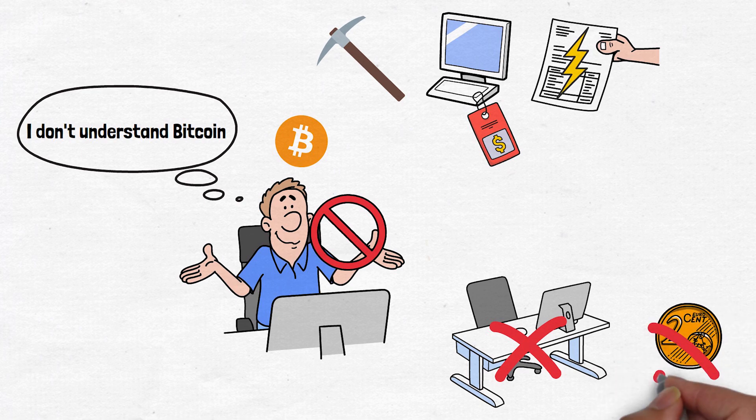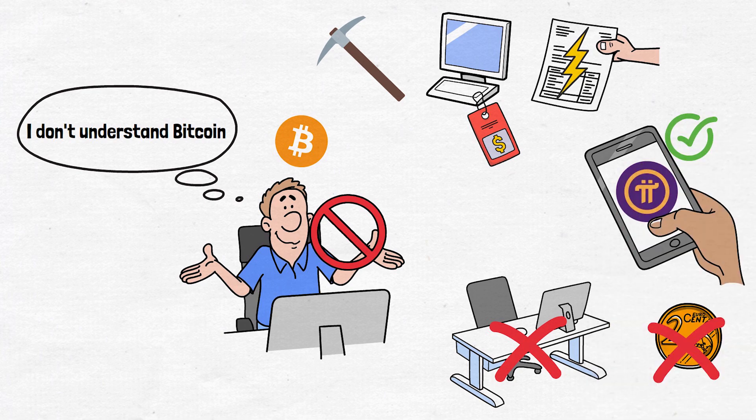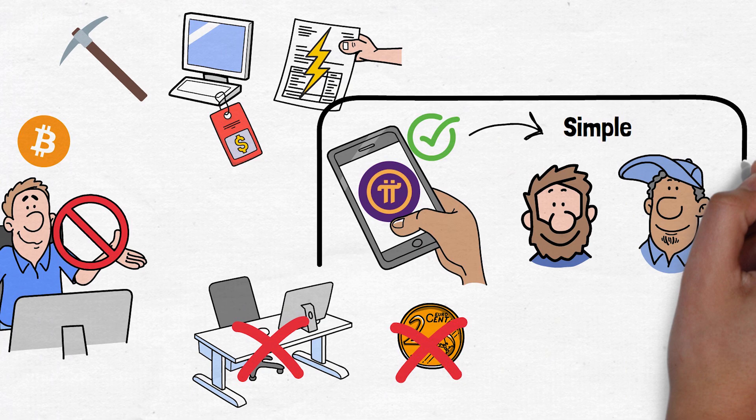That's where the Pi Network comes in, a cryptocurrency you can mine right on your smartphone. Pi Network claims to be simple and designed for everyday people like you and me. Sounds interesting, right?